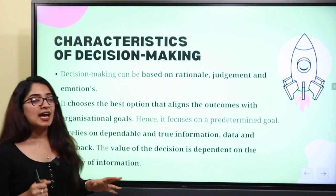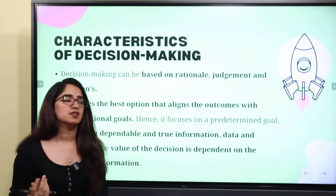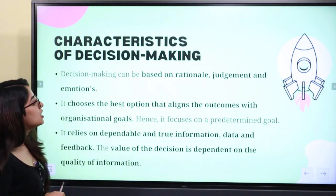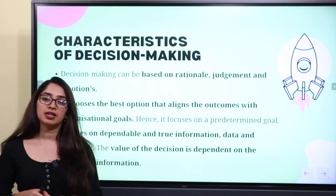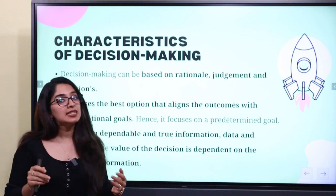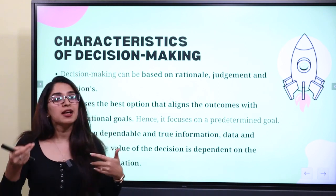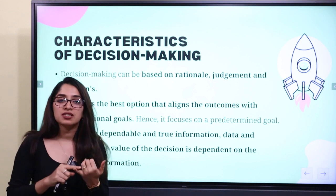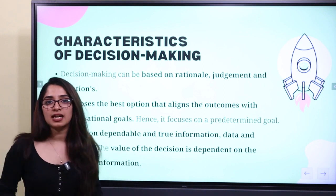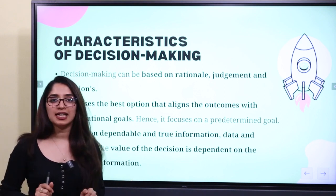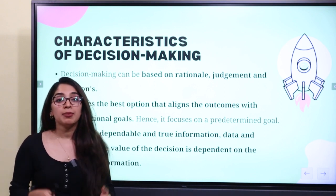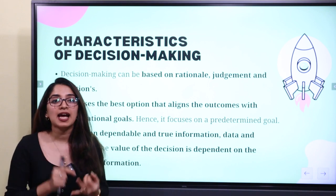These are the characteristics of decision making. Decision making can be based on rational judgment and emotions — our rational thinking. It can also be based on emotion. When someone has a decision, it can be based on emotion. For instance, if they decide for friends, they don't want to decide based on logic. In most cases it is based on emotion, and in other cases on rational thinking.